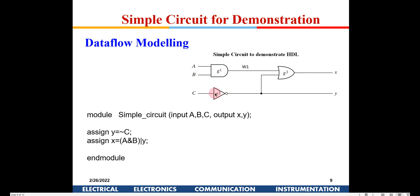For the same program as last time, in data flow modeling you write: assign Y equals NOT C, and assign X equals A AND B OR Y. You need to know the Verilog operators — they are available in many books and online. In just two lines the program is complete: Y equals NOT C and X equals A AND B OR C. This is data flow modeling.